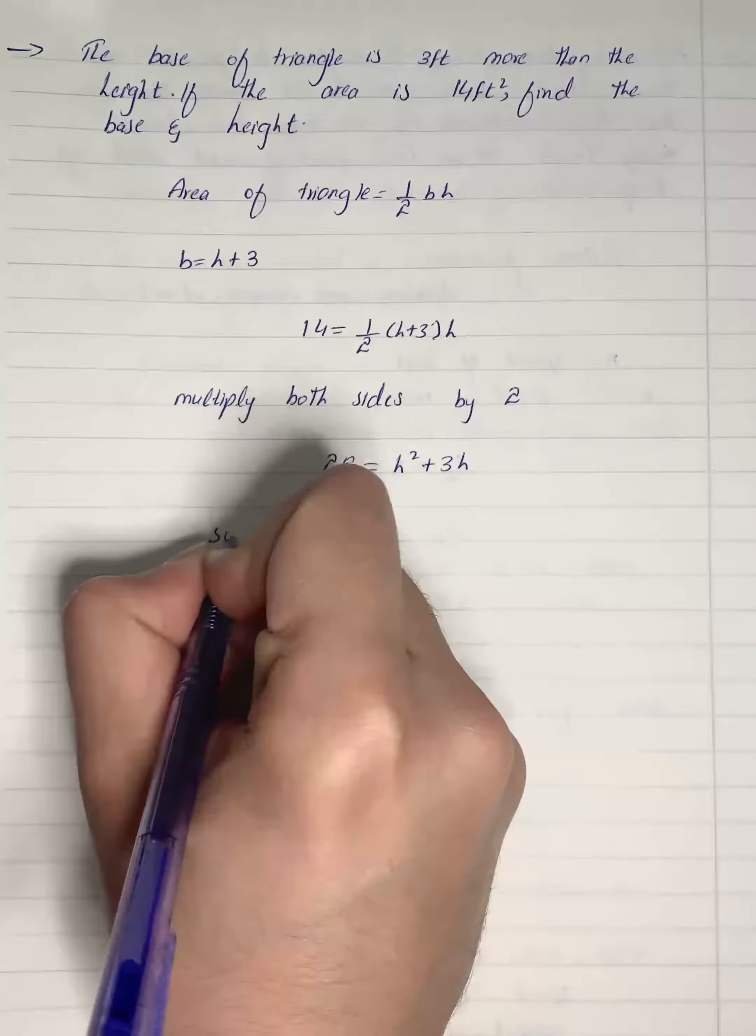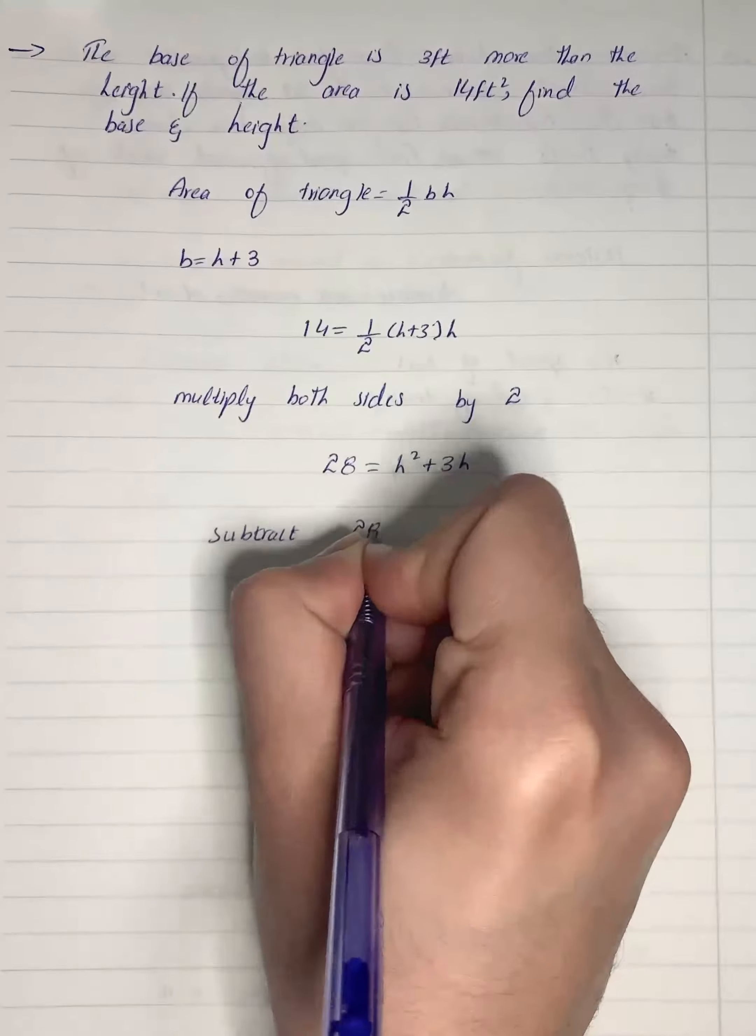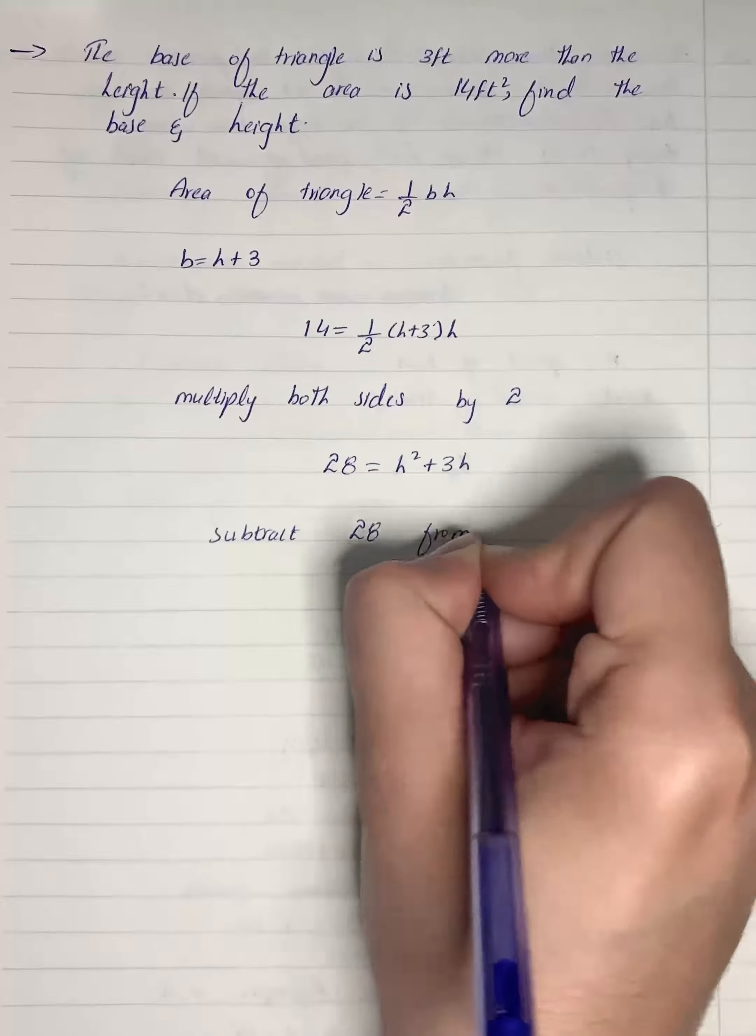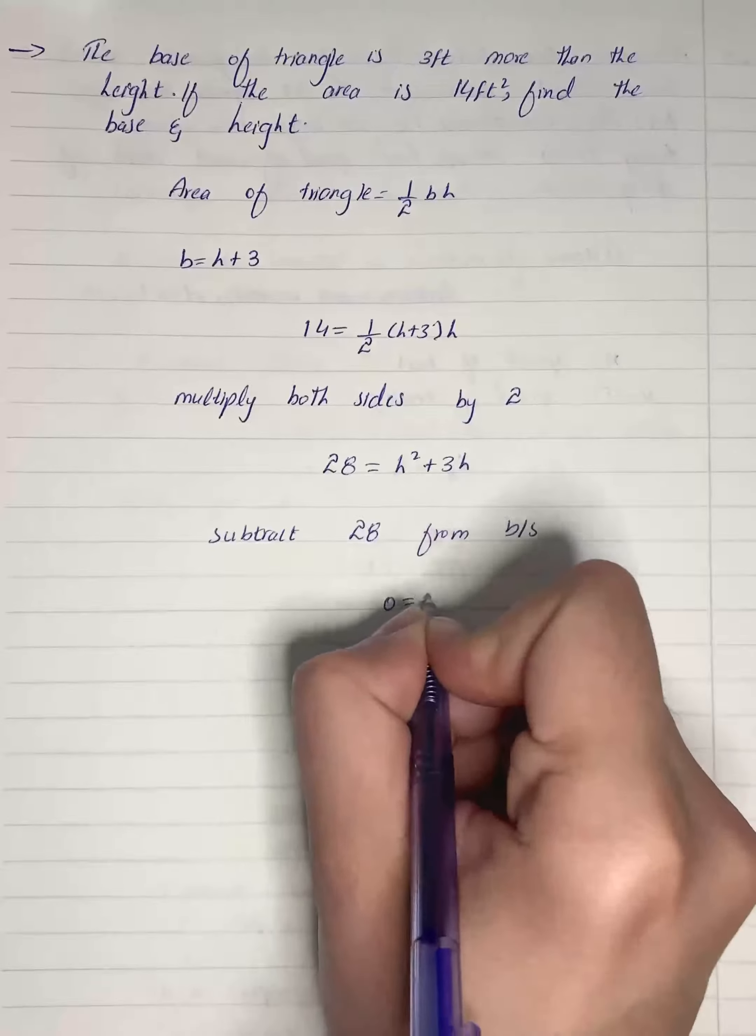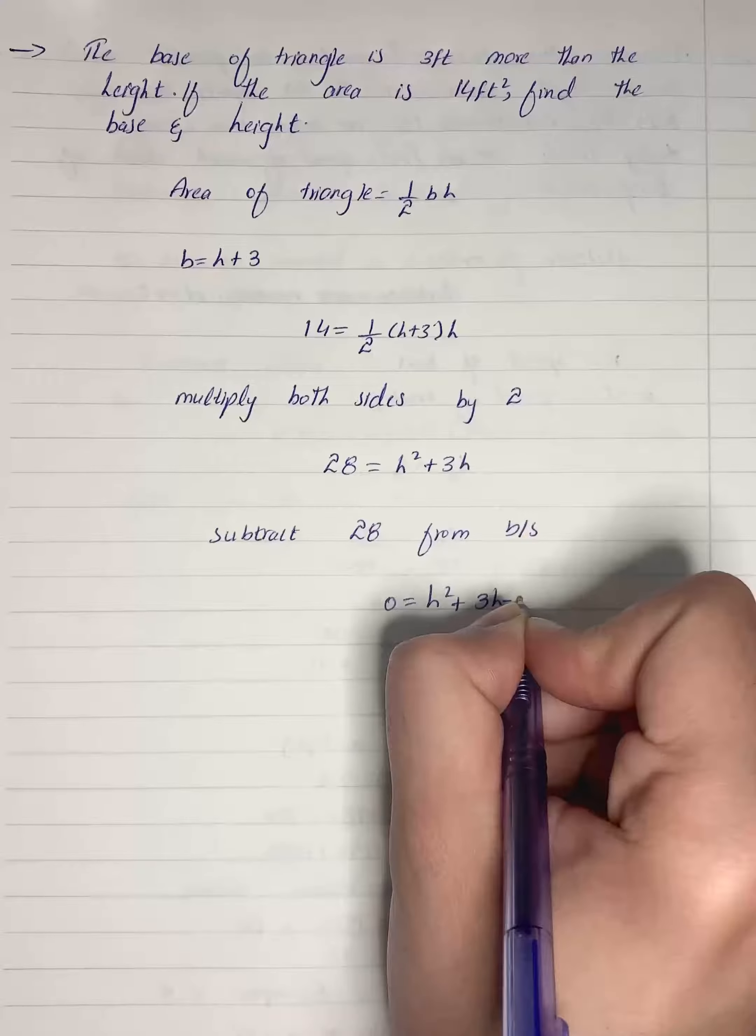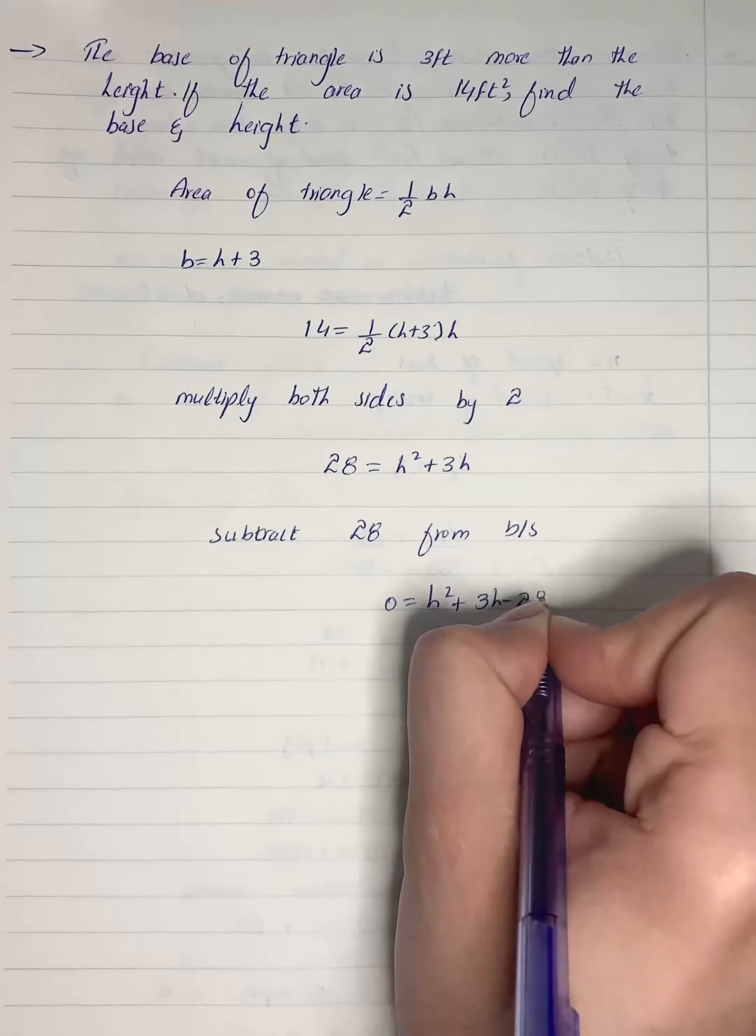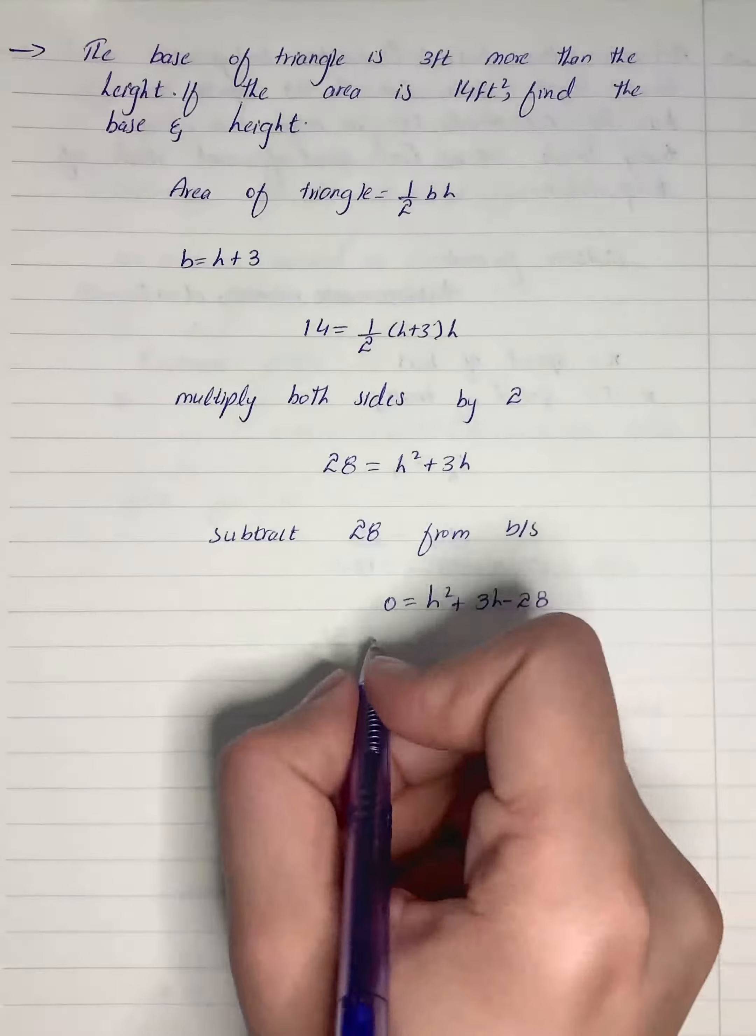We will subtract 28 from both sides, right? So it will give us 0 equals to h square plus 3h minus 28. We will factor the right side that is over here.